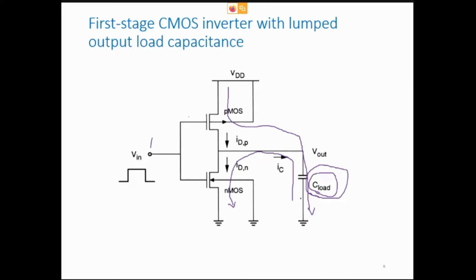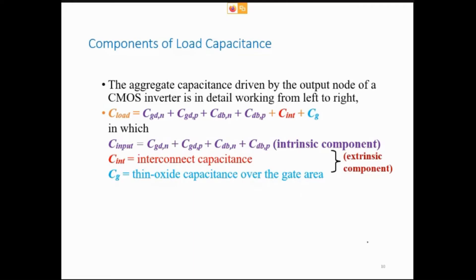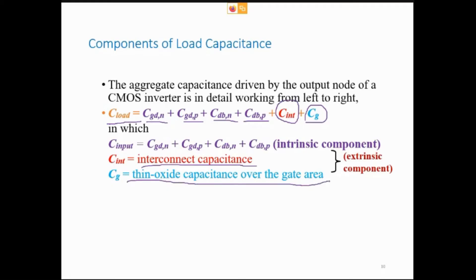C_load includes: CGD_N, CGD_P (gate-drain capacitances of NMOS and PMOS), CDB_N, CDB_P (drain-body capacitances), the intrinsic capacitance of the MOSFET, and CG — the gate capacitance of the next stage. The intrinsic capacitance accounts for the CMOS inverter itself, the interconnect (metallic connection between inverters) contributes as well, and the third component is the thin oxide gate capacitance of the next stage.